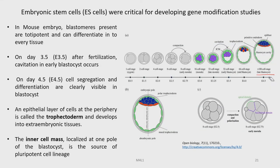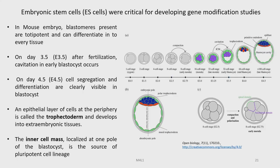Important structures to remember here include the trophectoderm, the primitive endoderm, and the epiblast. In a mouse embryo, blastomeres present are totipotent and can differentiate into almost every kind of tissue. On day 3.5 after fertilization, cavitation in the early blastocyte will occur. Then on day 4.5, cell segregation and differentiation are clearly visible in the blastocyte.